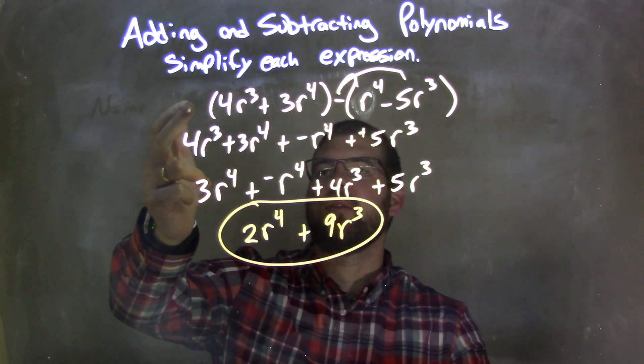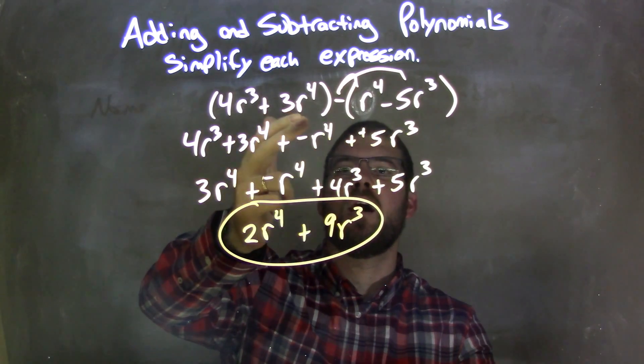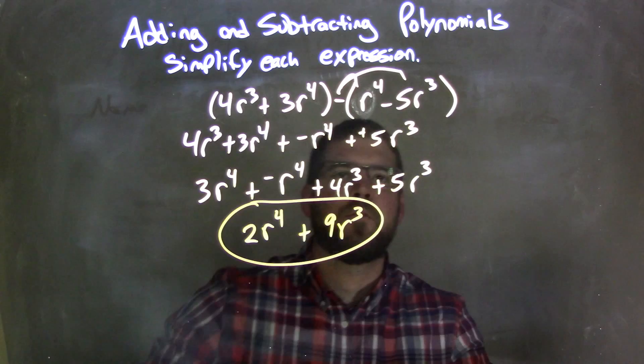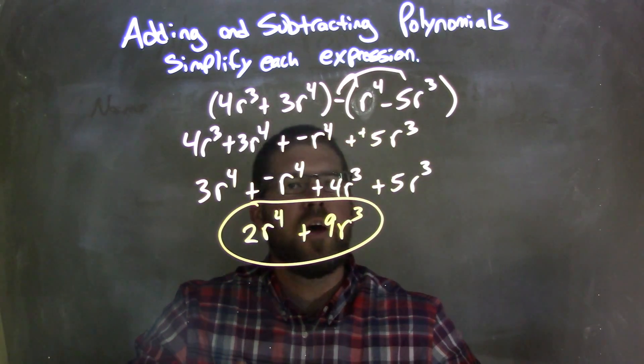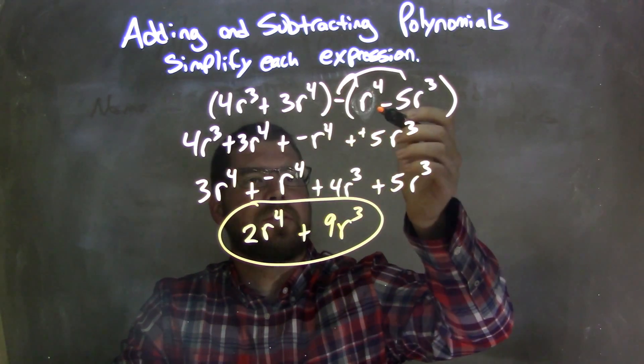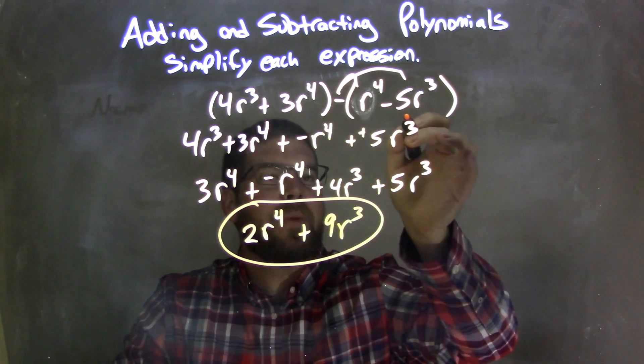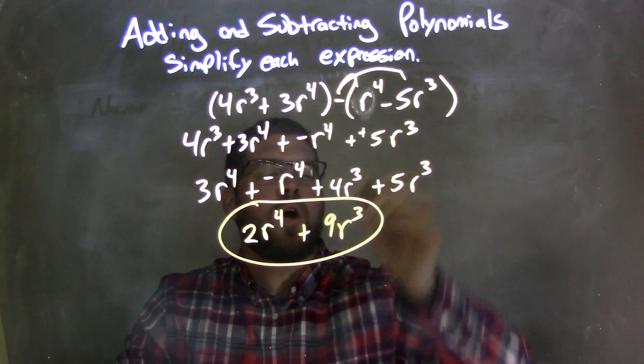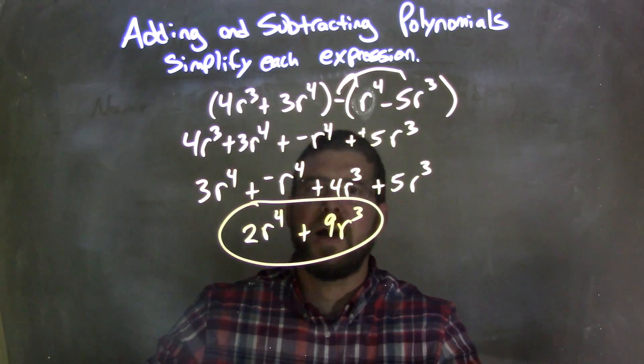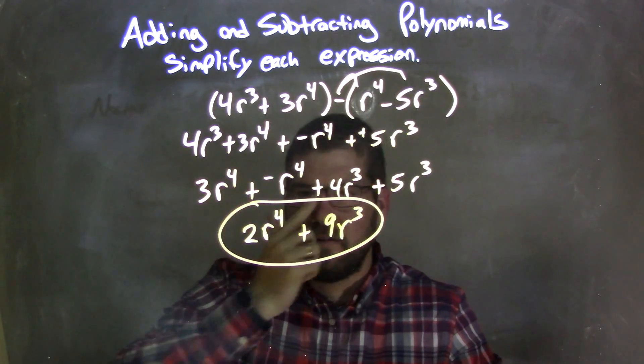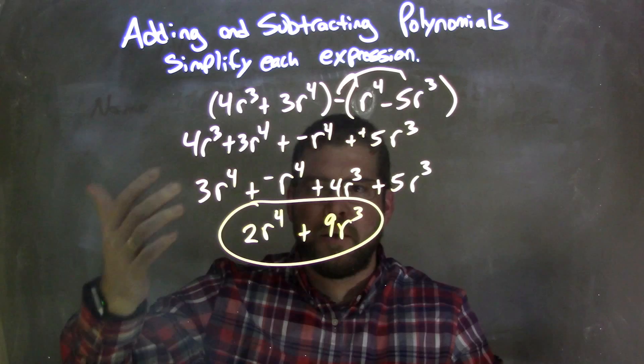So let's recap. We're given (4r³ + 3r⁴) - (r⁴ - 5r³). First step, I distributed that subtraction. Got a negative, plus a negative r⁴, and then two negatives make a positive here, plus a positive 5r³. I like to see everything as plus a positive. I find it easier to rearrange when I use the commutative property.